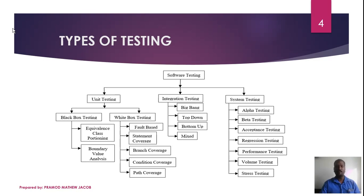The categories of Black Box Testing include: equivalence class partitioning, boundary value analysis, decision-based testing, and state-based testing. White Box Testing includes fault-based testing and coverage-based testing. Coverage-based testing includes: statement coverage, branch coverage, condition coverage, and path coverage.